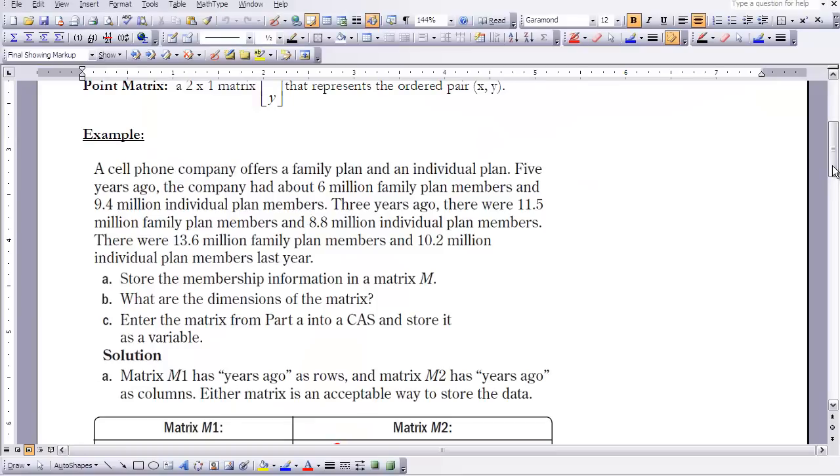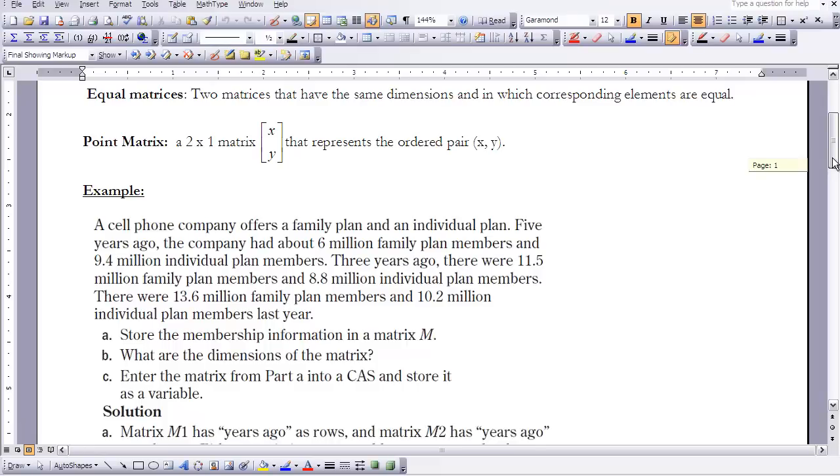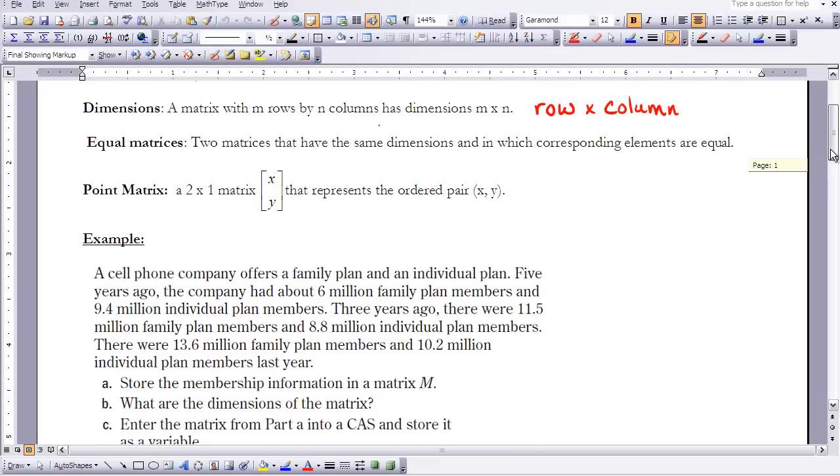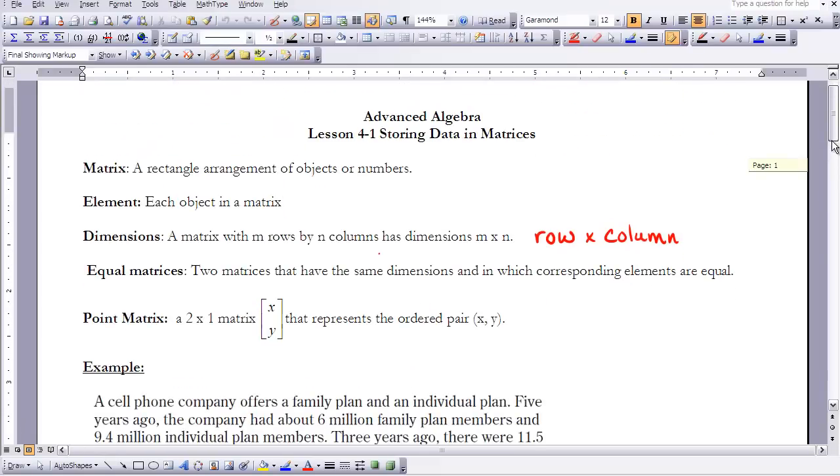Before we begin the first example here, I just want to touch upon two more vocabulary words that were listed here in your notes. Equal matrices, just being sure that you understand that when two matrices are equal to each other, that means they have the same dimensions and the same elements corresponding within the matrices. So they have to really look identical in order for them to be equal.